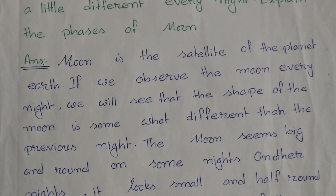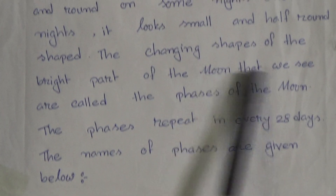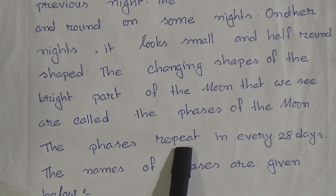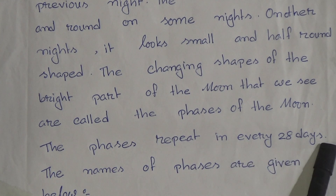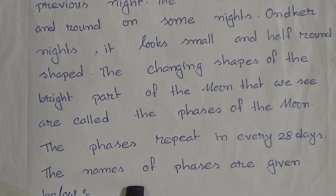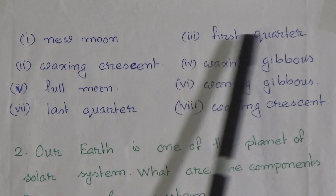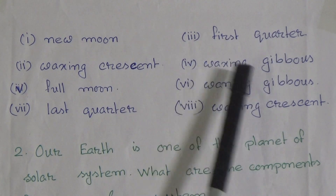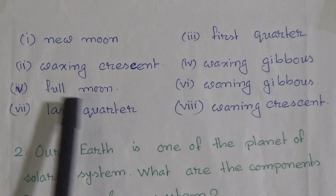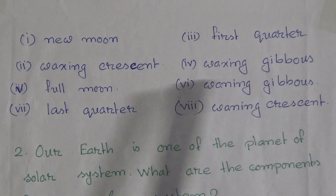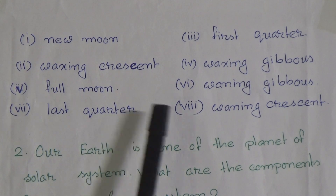The changing shapes of the bright part of the moon that we see are called the phases of the moon. The phases repeat every 28 days. The names of the phases are: one, new moon; two, waxing crescent; three, first quarter; four, waxing gibbous; five, full moon; six, waning gibbous; seven, last quarter; and eight, waning crescent.